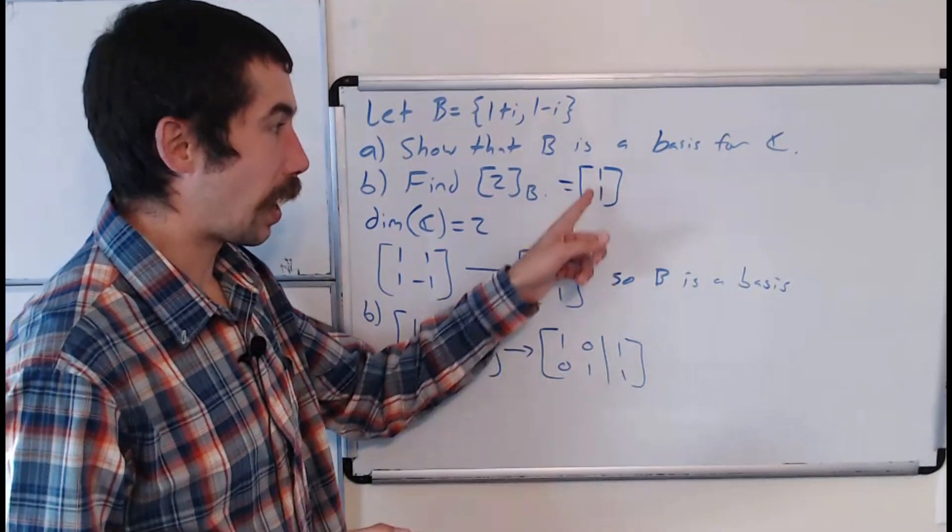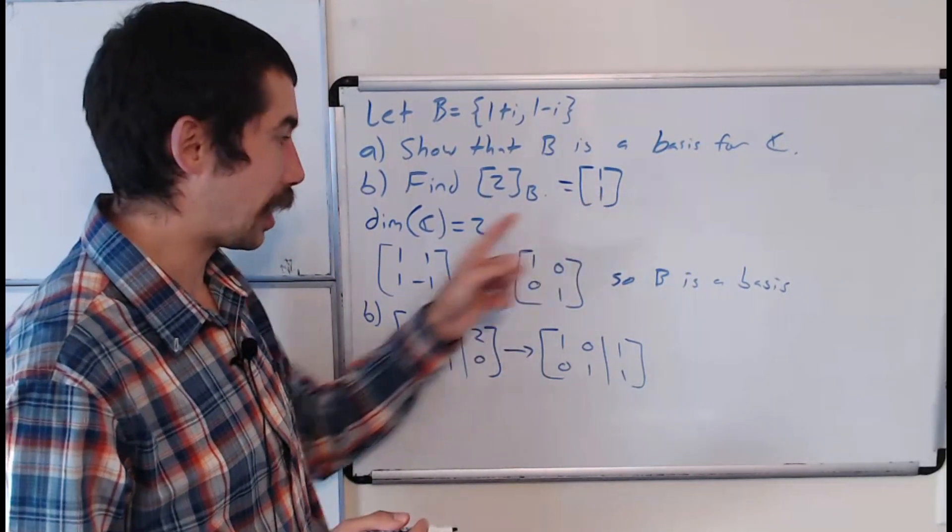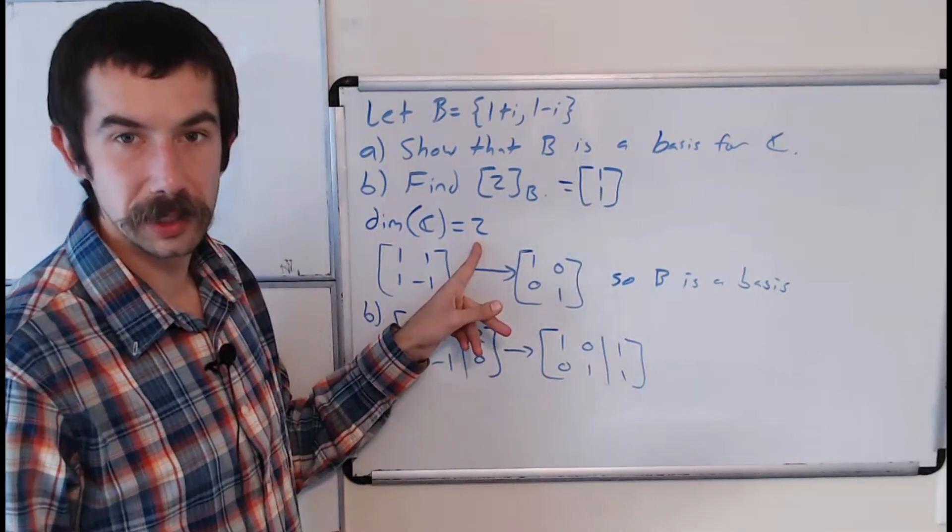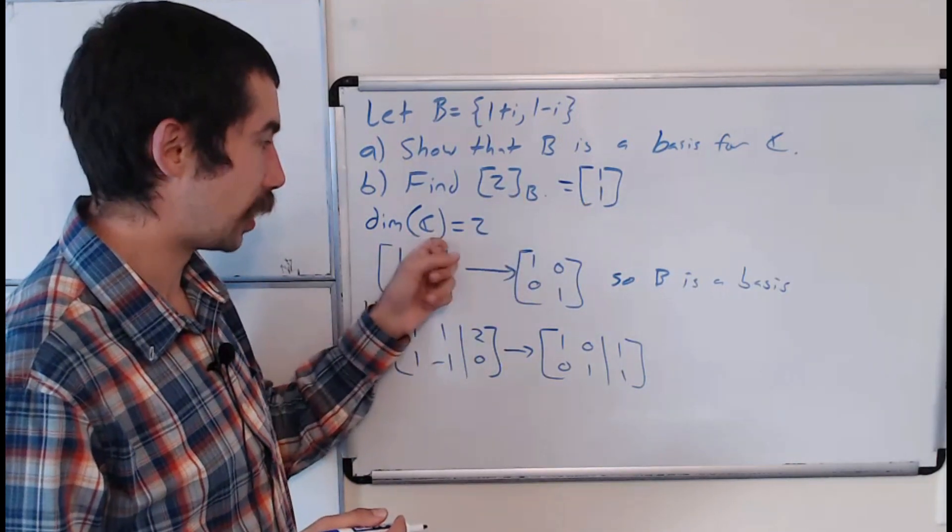And we know the number of entries in this vector should be equal to the dimension of the vector space that we're in, which is ℂ, and the dimension of ℂ is 2.